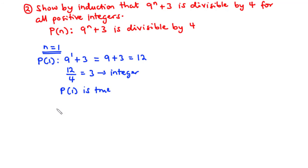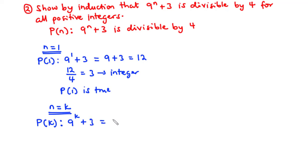For the second step, we assume the statement is true for n equals k, where k is any positive integer. So P(k): 9^k plus 3 equals 4m for some integer m. Making 9^k the subject: 9^k equals 4m minus 3. We call this equation 1.